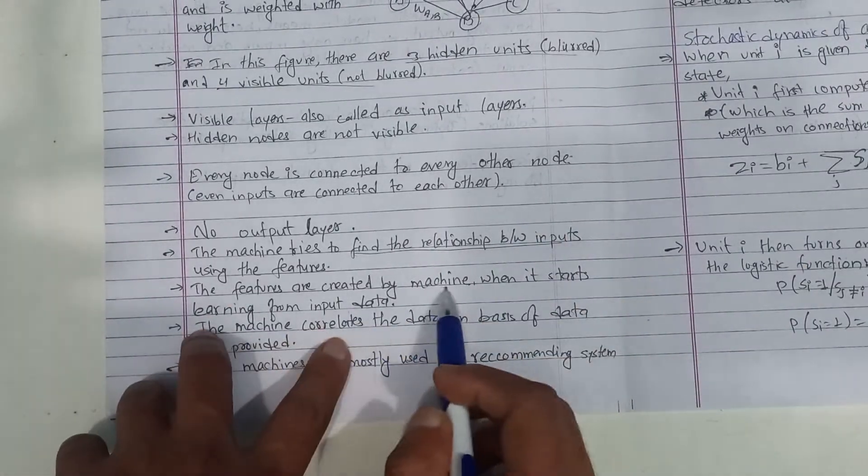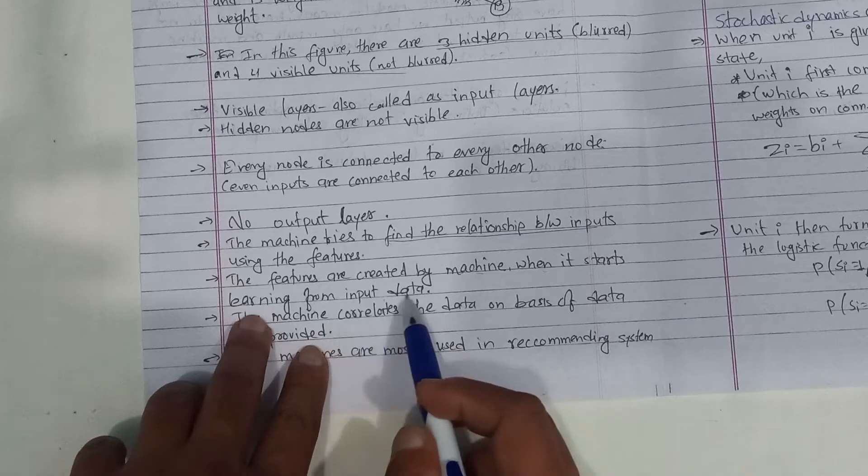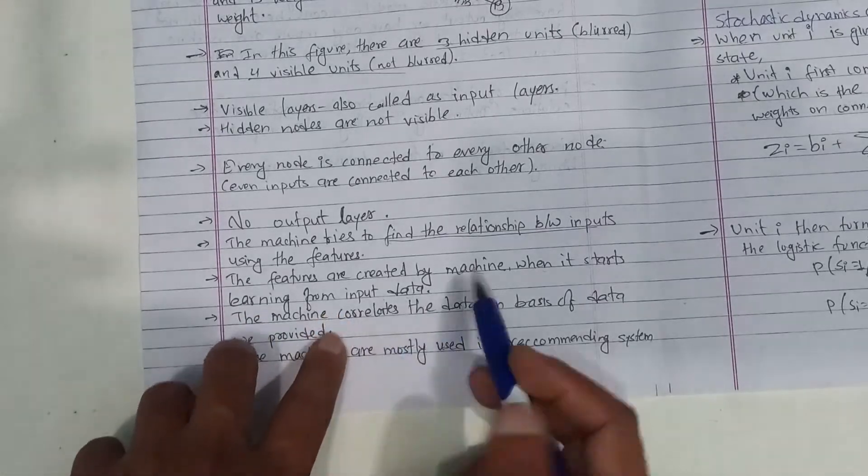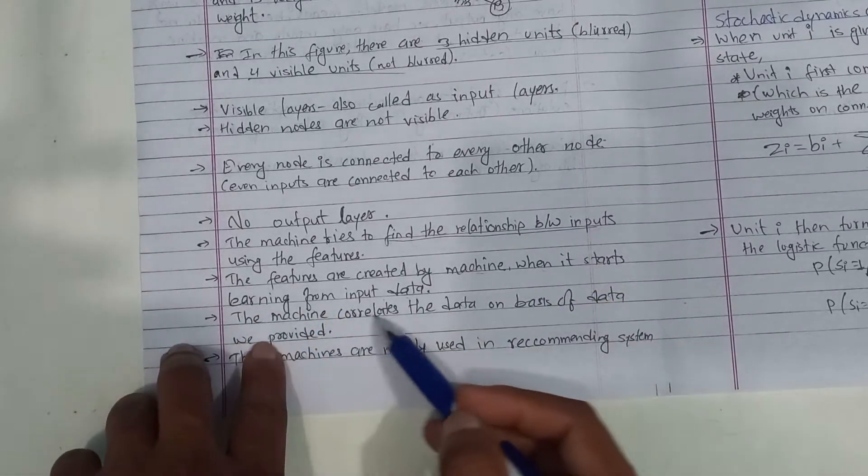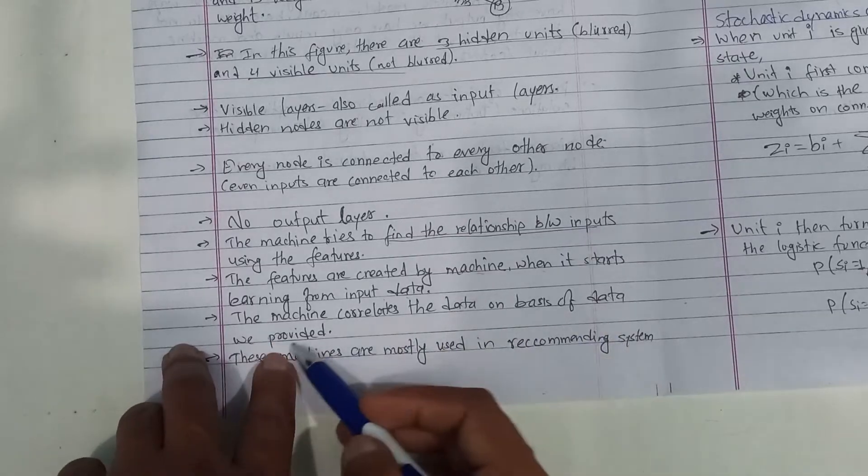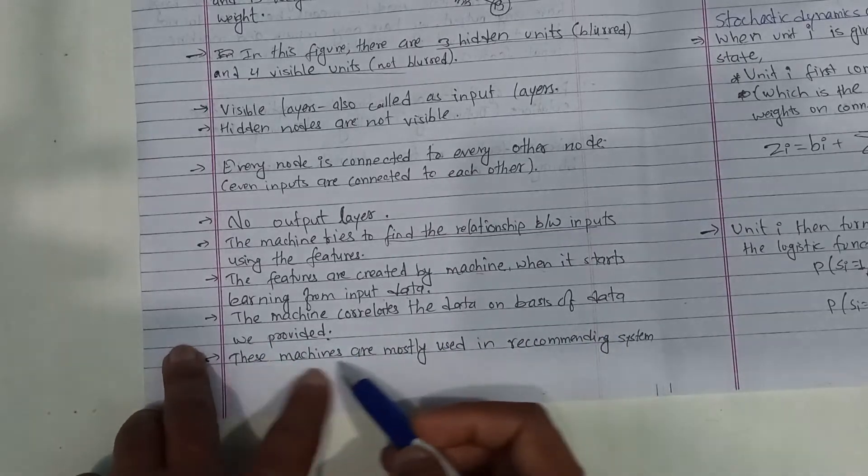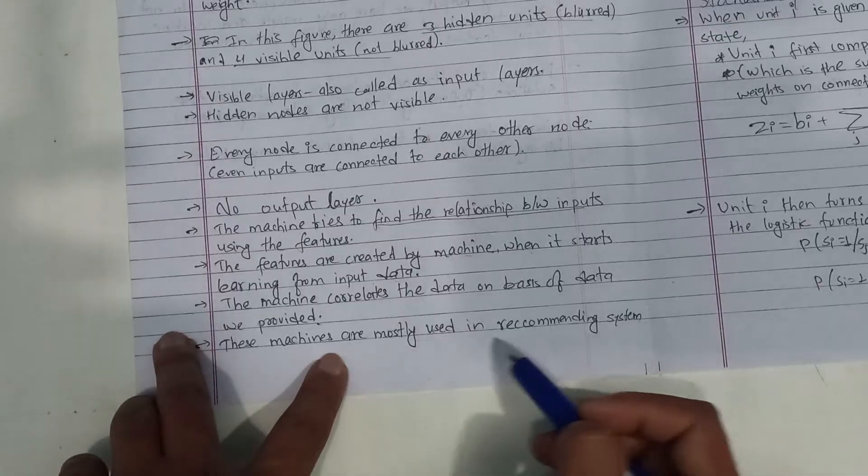Features are created by machine when it starts learning from the input data. Input data, learn. Machine correlates the data on the basis of the data we provided.